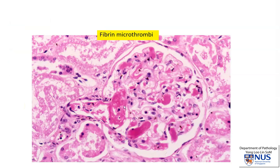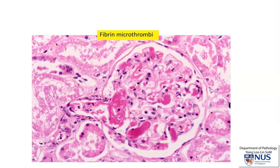Sometimes there may be little microthrombi within the glomerular capillaries and also the arterioles. And you can see in this example that there is actually coagulative necrosis of the cells in the surrounding tubules within the renal cortex.